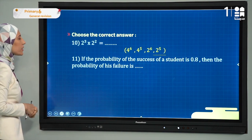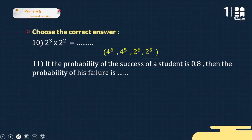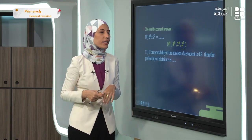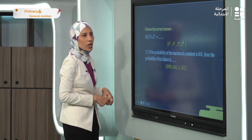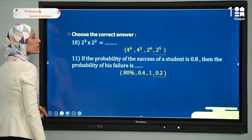Exercise eleven: if the probability of a student's success is 0.8, what is the probability of failure? The total probability of a certain event equals 1. So the probability of failure = 1 - 0.8 = 0.2.